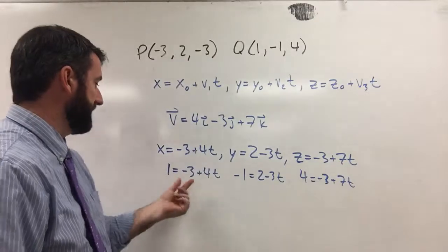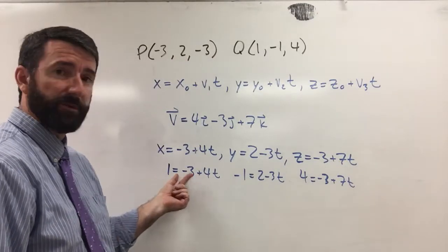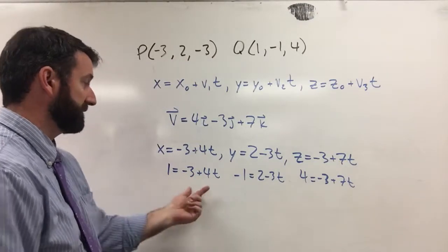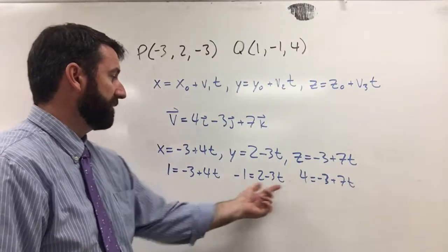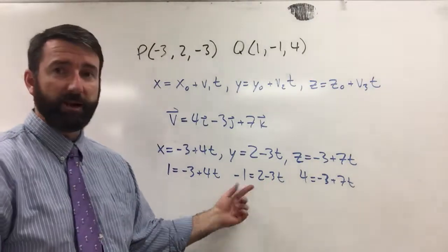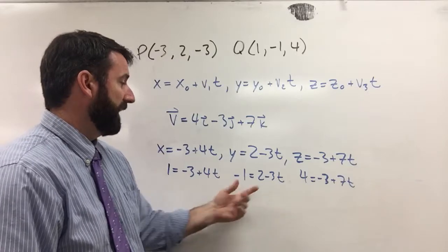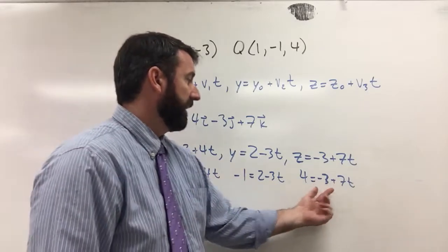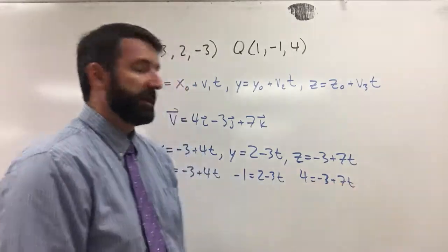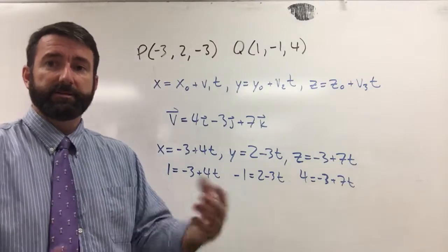And notice for each of these, if we were to add 3 to both sides, we get 4t = 4, so t = 1. Move this 2 over, we're getting -3t = -3, so t = 1. Move that over similarly, we're going to get 7t = 7, so t = 1.